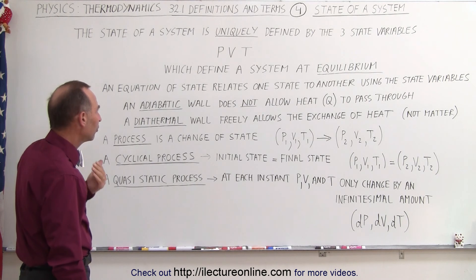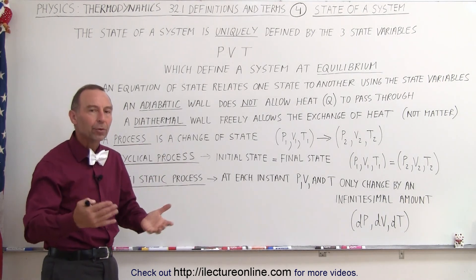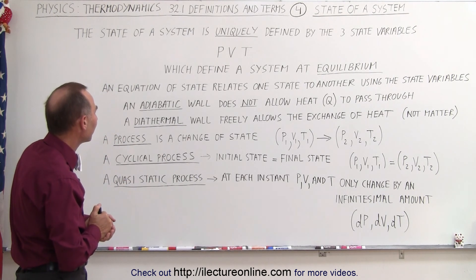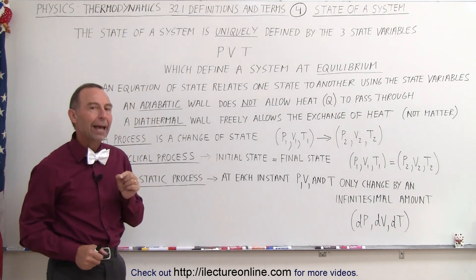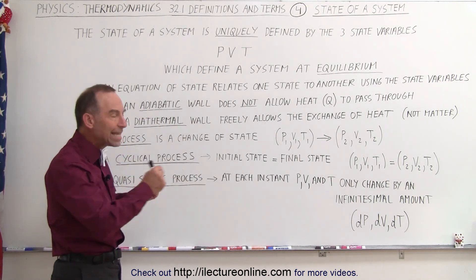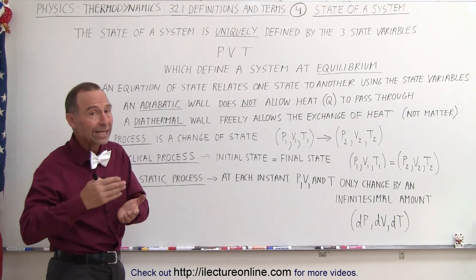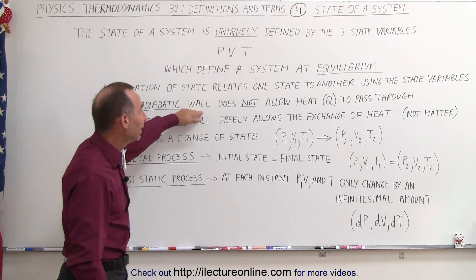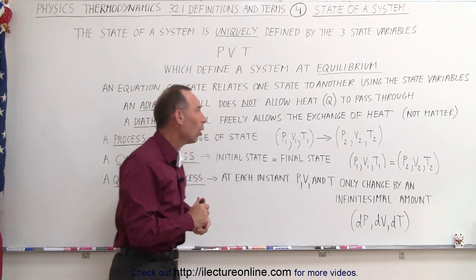Now, we also want to consider the wall that contains our sample, for example, a sample of gas that we may have. The wall could be adiabatic. Whenever you see the term adiabatic, that simply means that no heat can be exchanged. An adiabatic process is a process where no heat is being exchanged. When we have an adiabatic wall, it does not allow heat, we use the symbol Q for heat, to pass through that wall.